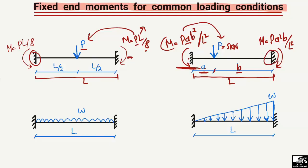Now there is a uniformly distributed load of w — how can we get the moment value at these support points? The moment value changes because the variation of the load is different. For a uniformly distributed load on the fixed-end beam, the moment will be equal to wL²/12 at both supports. The same moment wL²/12 will be distributed to both supports.